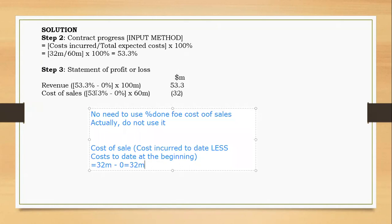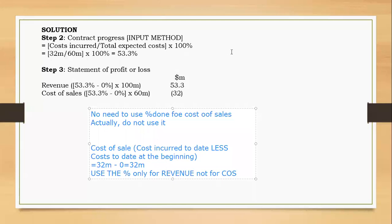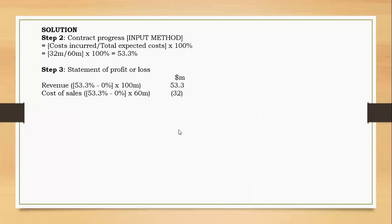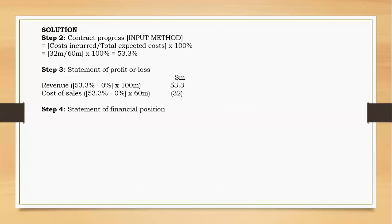Ignore the percentage for cost of sales. Whether you use the input method or output method, use the percentage only for revenue, not for cost of sales. The 32 figure — if you check the costs incurred computation, you'll find it there, and from the question itself it was seen as 32. Now go to the statement of financial position and determine the contract asset or liability.